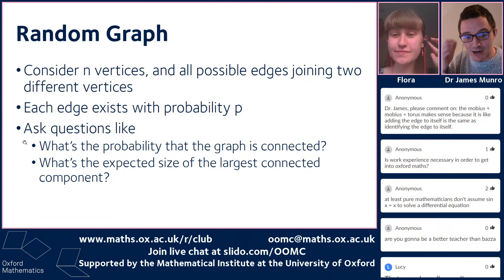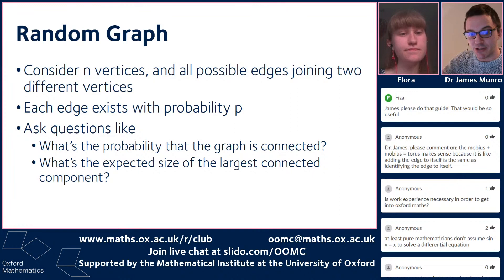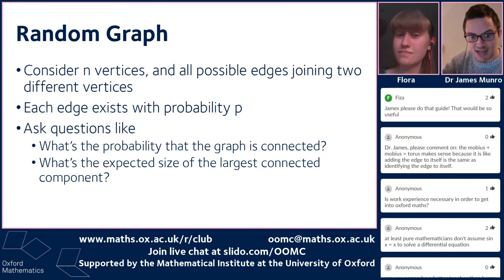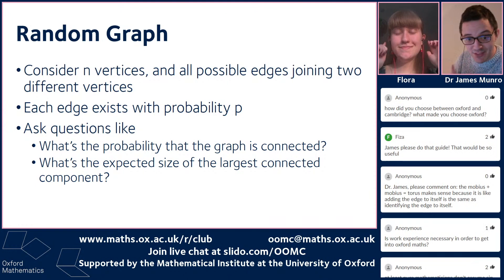James introduces a final problem about random graphs. The idea is you have some vertices and for every possible edge you either draw it in or not, with probability p, independently for every edge. You can then ask fun questions like what's the probability the graph is connected, or what's the expected size of the largest connected component.